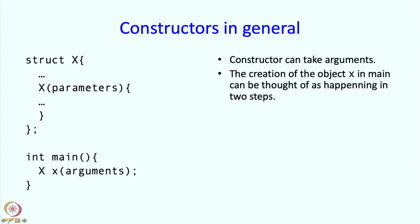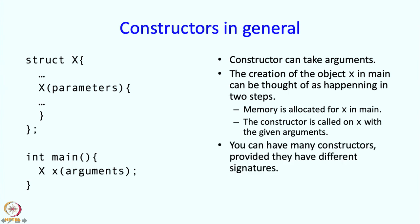The constructor can take arguments and the creation of an object x in main can be thought of as happening in two steps. First, the memory is allocated for x in the activation frame of main, and then the constructor is called on x with the given arguments. This code executes with respect to these arguments. If you have members referenced here, they are considered to be the members of the constructed structure. You can have many constructors provided they have different signatures.